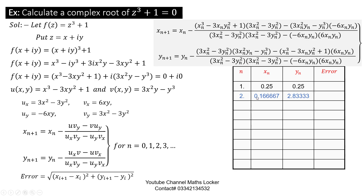Substituting x_n and y_n into the formula and simplifying, we get x_{n+1} = 0.152205 and y_{n+1} = 1.8937. Check the difference between successive values; if not similar, substitute again and continue iterating.